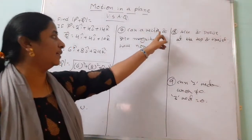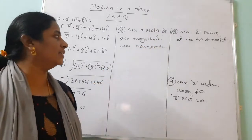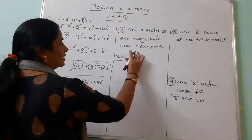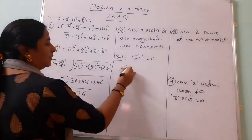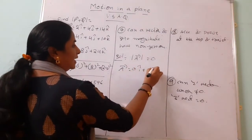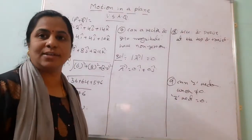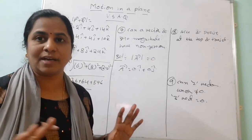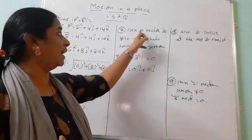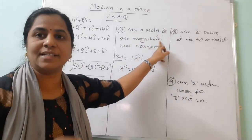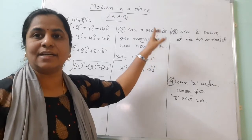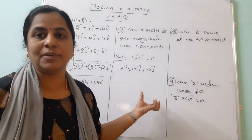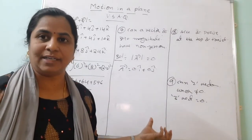The seventh VSAQ: can a vector of zero magnitude have non-zero components? The answer is no. If a vector equals zero, it must be written as 0î + 0ĵ, meaning Ax = 0 and Ay = 0 — non-zero components are not possible. Writing 'no' earns one mark; the explanation earns another.